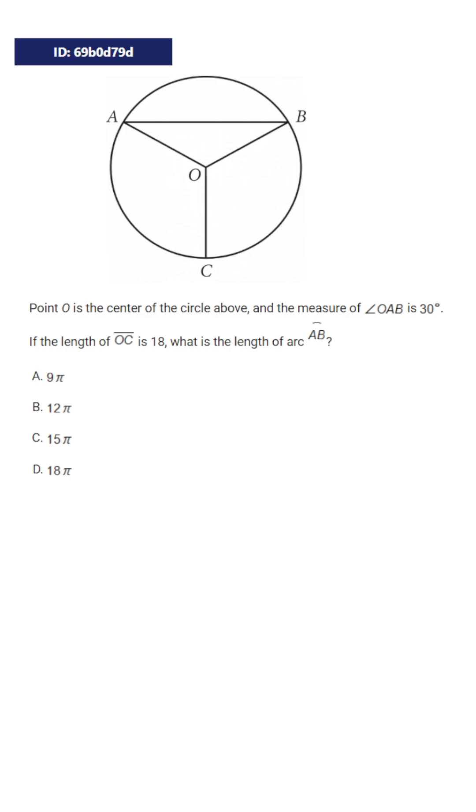The first thing we should do for any geometry question is label the parts that we're given. We're given that angle OAB is 30 and then we're also given that the length of OC is going to be 18.